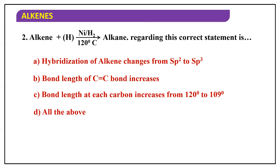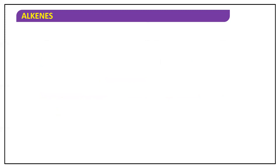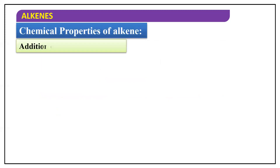Alkanes are sp³ hybridized, so since they are sp³ hybridized the bond angle will change. The hybridization of the alkene changes from sp² to sp³ — that's the answer: all of the above.